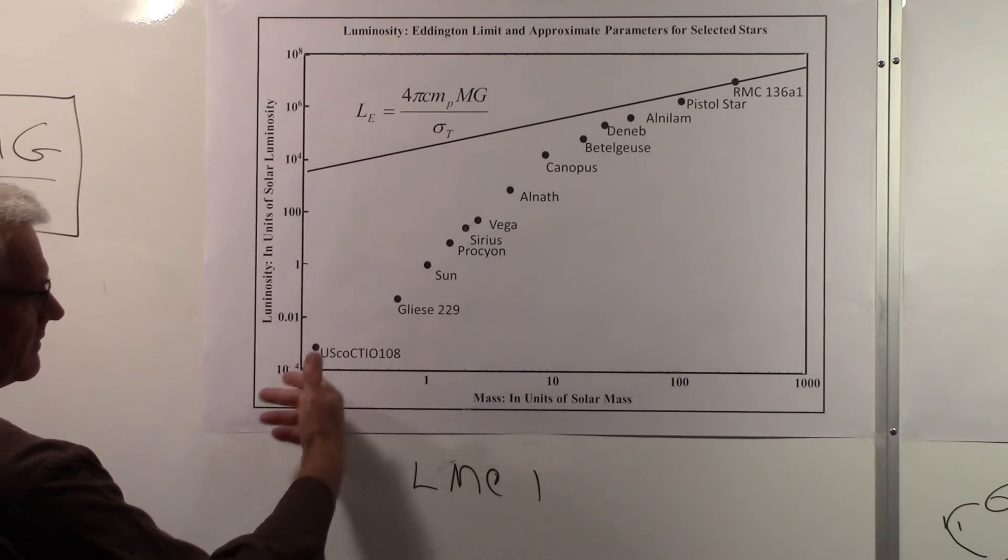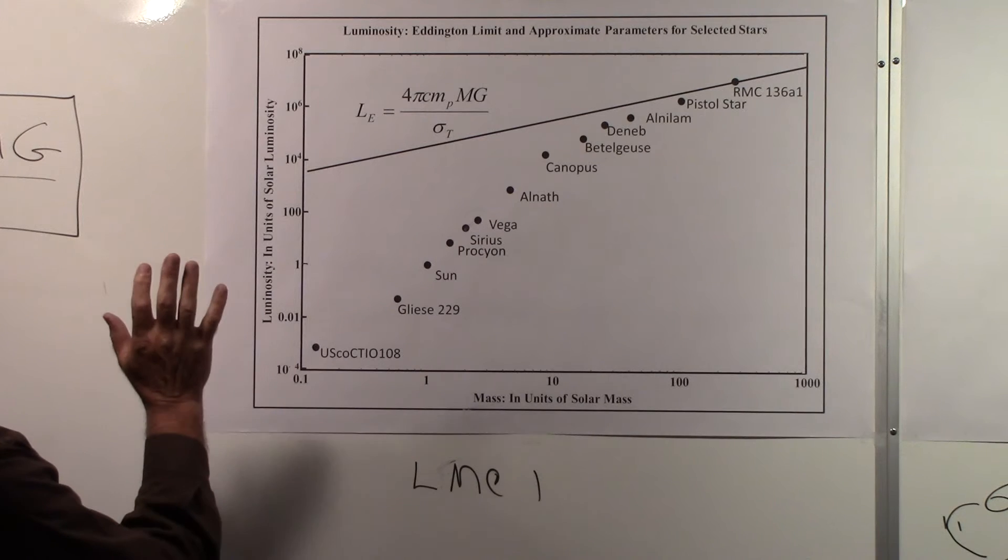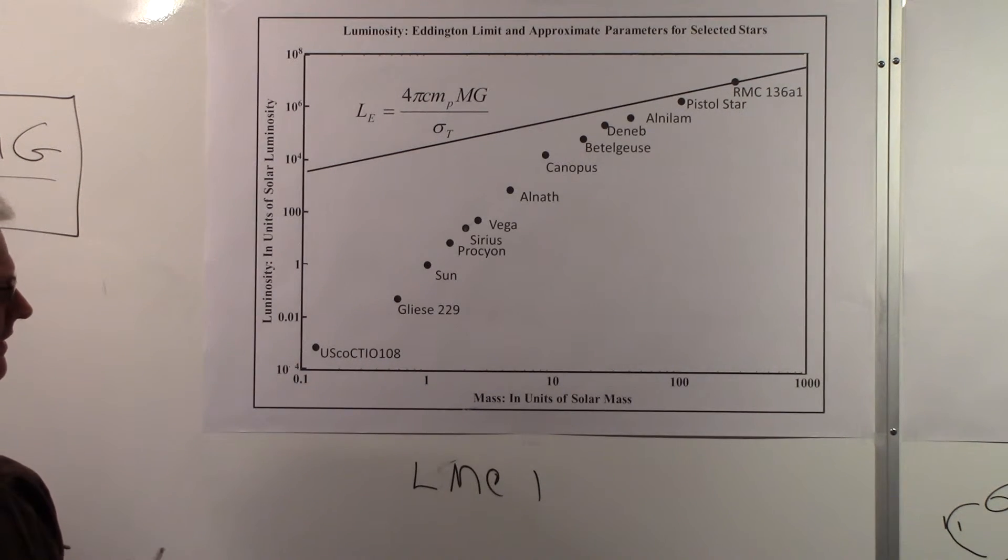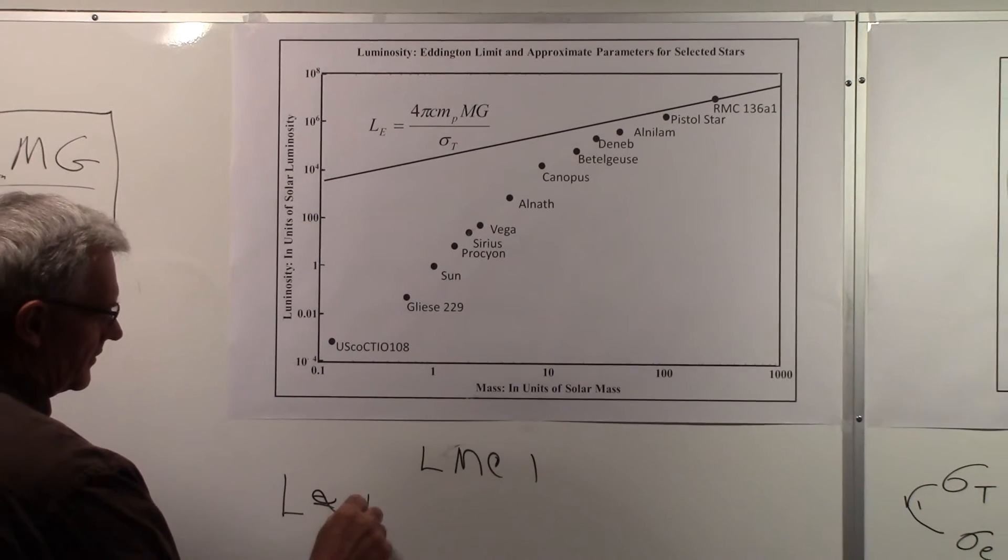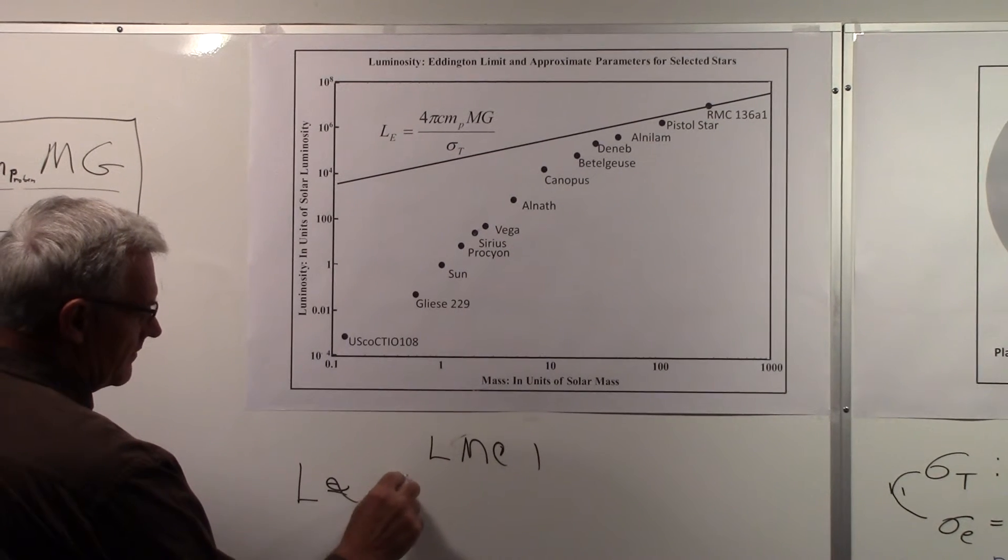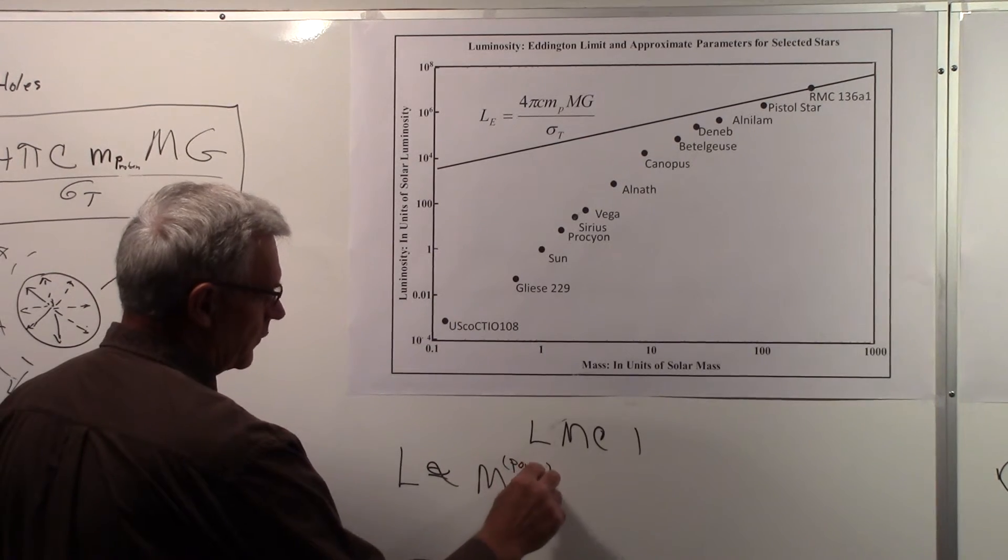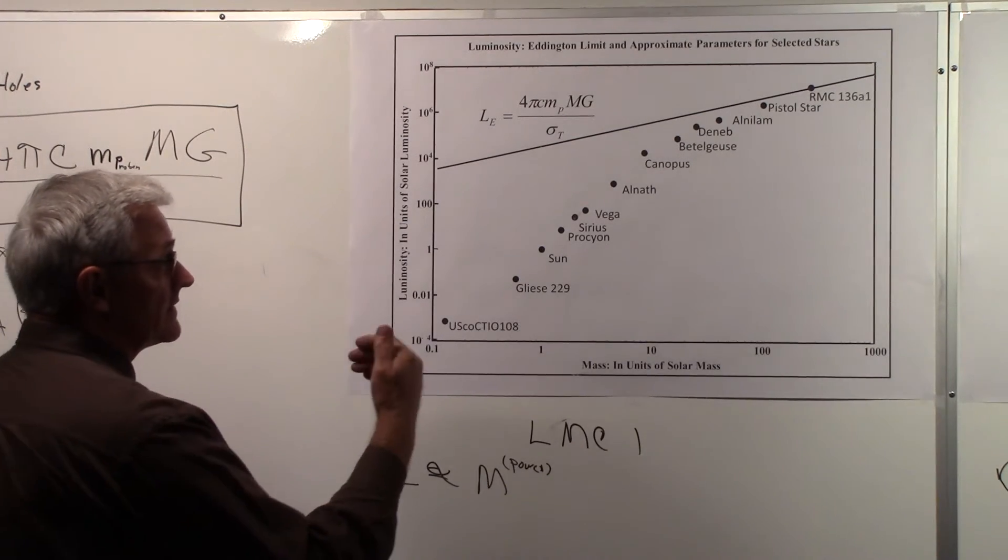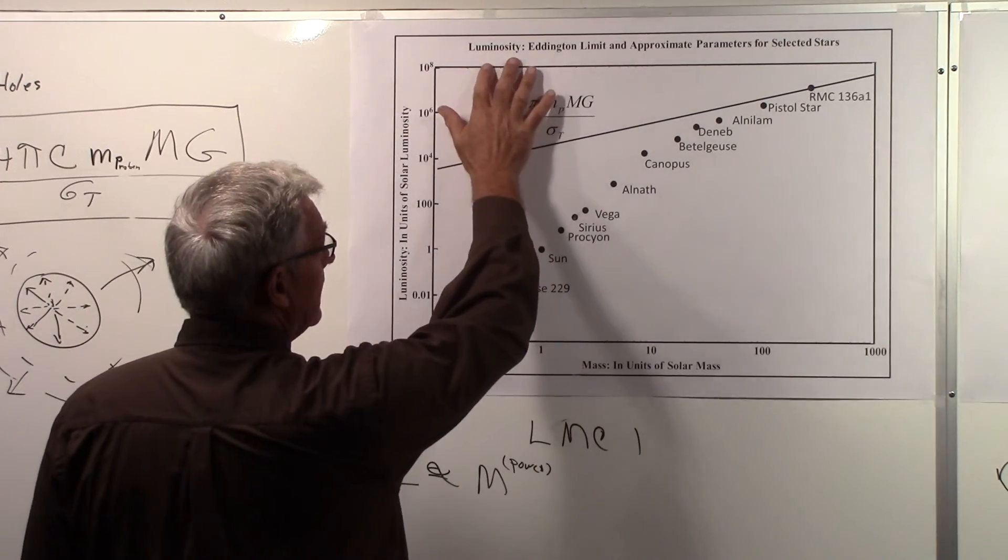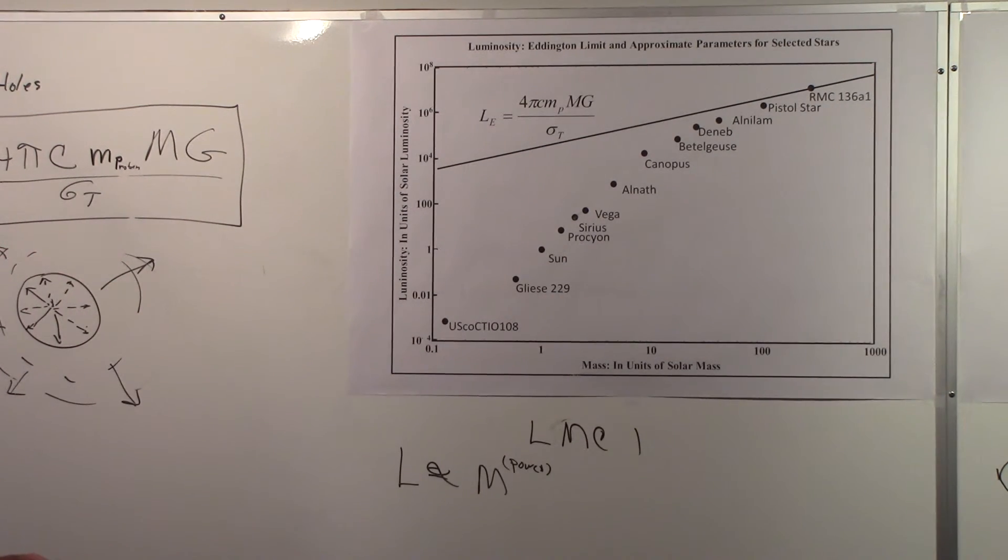It looks like there's some regions on here that you could fit a line to. Since this is basically a log-log plot, it looks like for different cases the luminosity would be proportional to the mass to some power, where that power is actually the slope on this scale. So that's the luminosity Eddington limit and approximate parameters for several selected stars, and you can see the Eddington limit looks like it's an actual real thing.